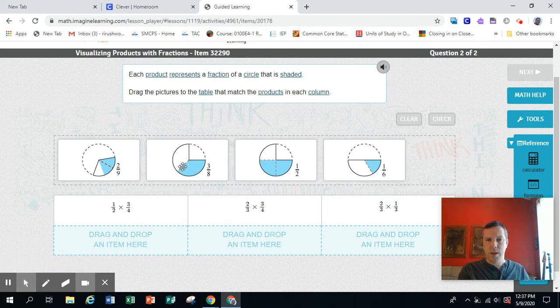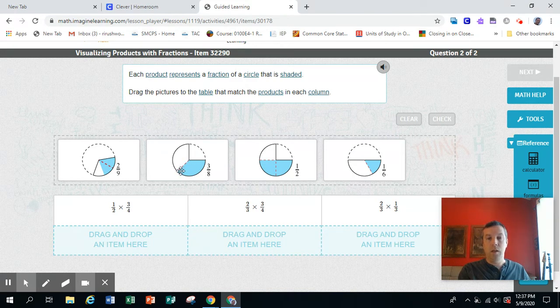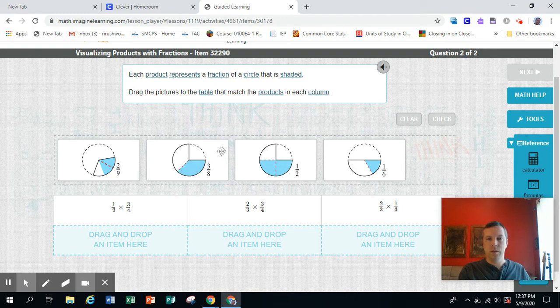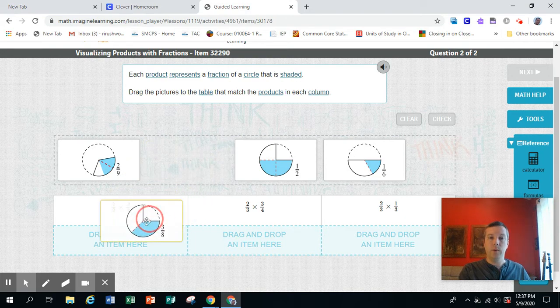So we're starting out with 3 fourths. But then this red dotted line cuts that perfectly in half. So this drawing is showing 1 half of 3 fourths. So here is 1 half of 3 fourths. That one goes there.